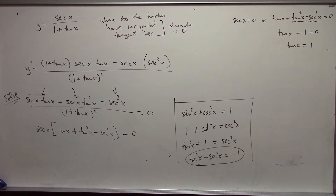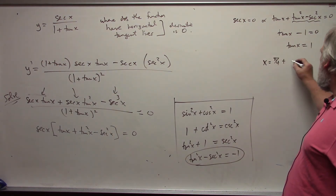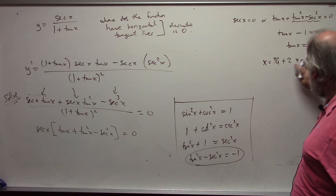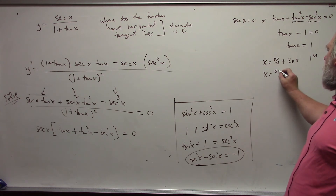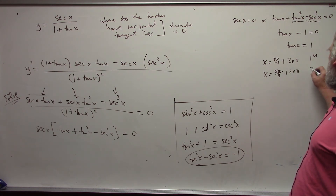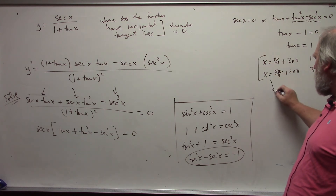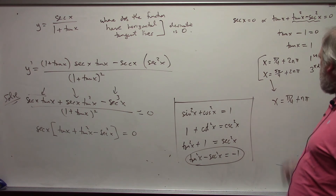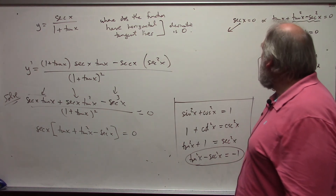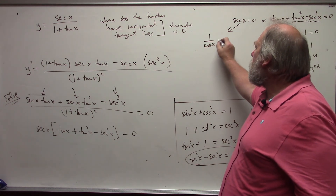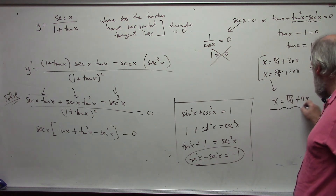Tangent(x) equals 1 means x equals π/4 plus 2nπ for the first quadrant values, or x equals 5π/4 plus 2nπ for the third quadrant values. We can combine these and write x equals π/4 plus nπ. For the other factor, secant(x) equals 0 would mean 1 over cosine(x) equals 0, which implies 1 equals 0 — that is impossible. Therefore, the solutions x equals π/4 plus nπ are the only values where the function has horizontal tangent lines.